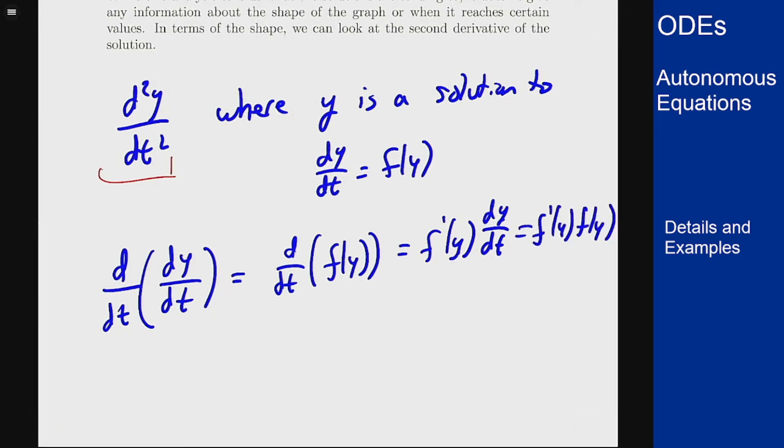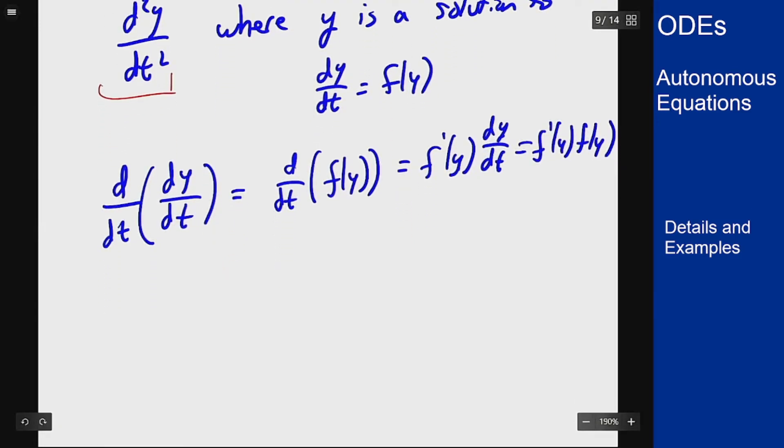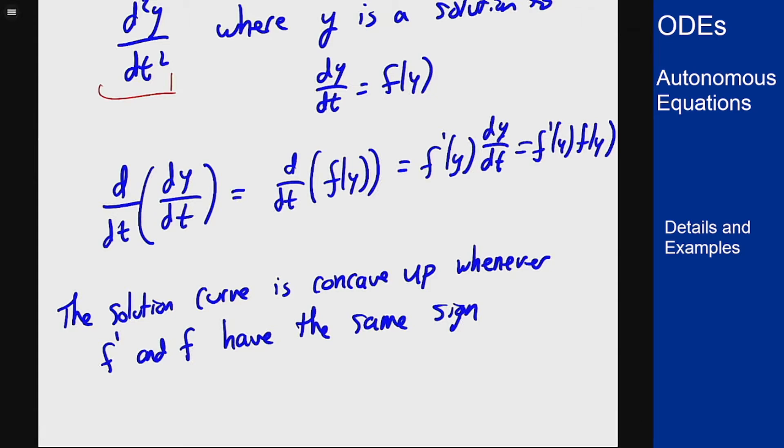So what this says is that the solution curve is concave up whenever this product here is positive, which means that f and f prime have the same sign, and it's concave down when they have opposite signs. If I look at a graph of a function f and set up in this context, we can see what that's going to mean for our solution.